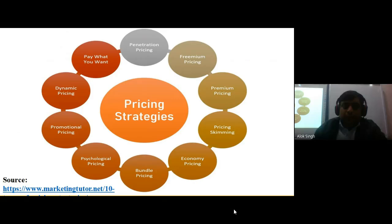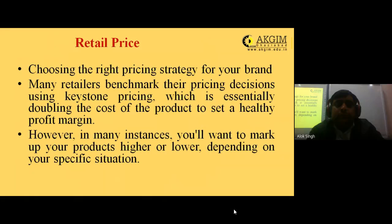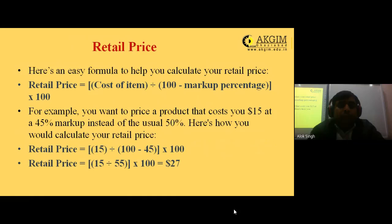The first type of pricing strategy is retail price. Choosing the right pricing strategy for your brand is important. Many retailers benchmark their pricing decisions using keystone pricing, which is essentially doubling the cost of a product to set a healthy profit margin. There is an easy formula to calculate retail price: Retail Price = (Cost of Item ÷ (100 − Markup Percentage)) × 100.